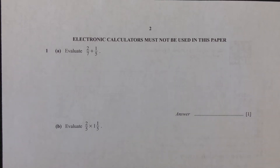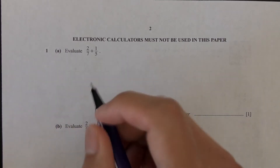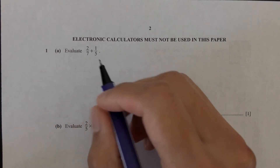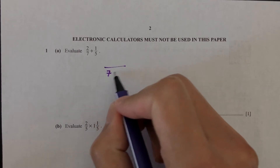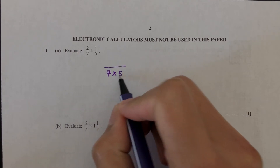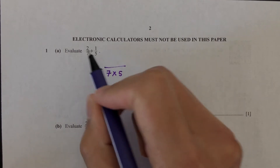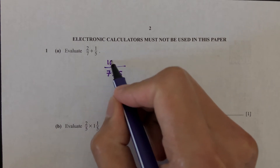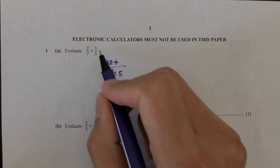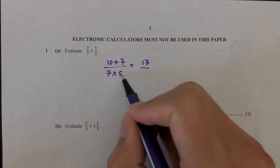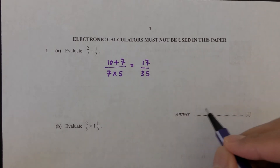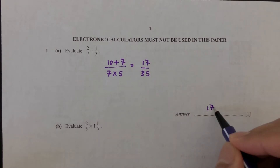Question number one: evaluate 2 over 7 plus 1 over 5. First, we have to find a common denominator, so we do 7 times 5. Then we cross multiply: 2 times 5 is 10, plus 1 times 7 is 7, which gives 17 over 35. That is your answer.